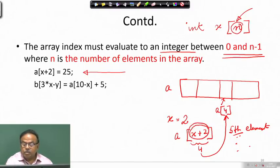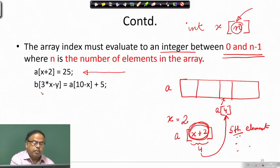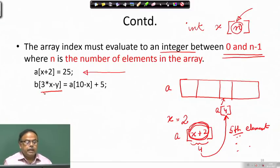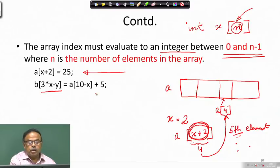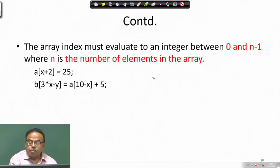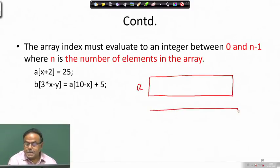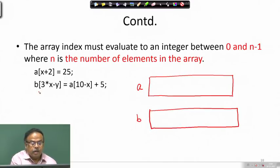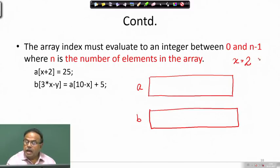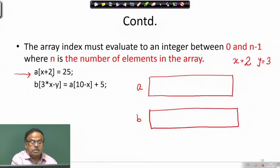We have to be careful that the computed index value lies between 0 and n minus 1. Here is another example where the array index value is computed through an expression: 3*x minus y. We are working with 2 array variables. Let us draw a picture - suppose array a and array b, with x equal to 2 and y equal to 3.